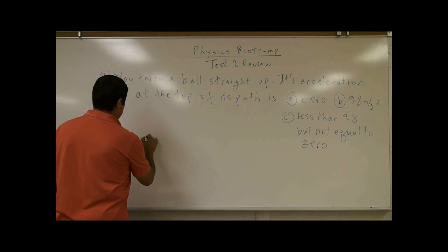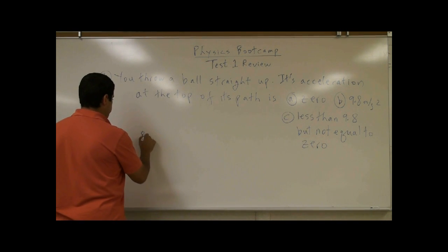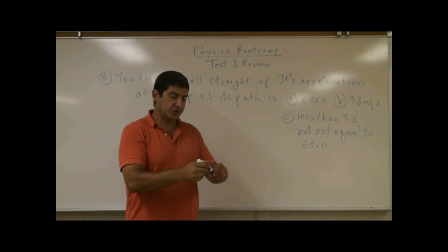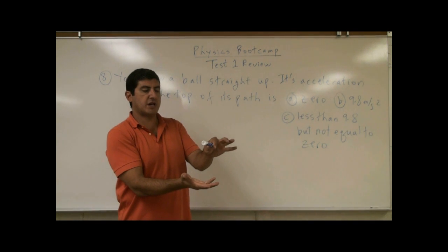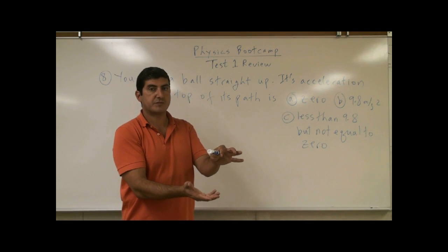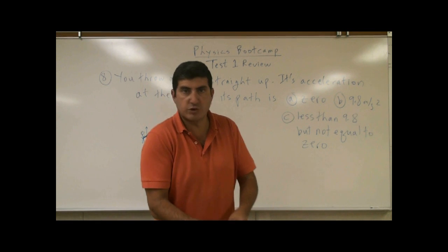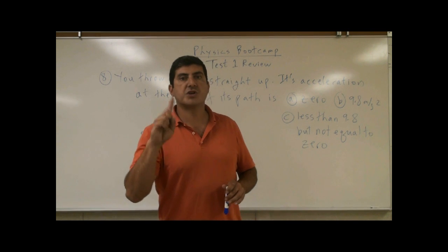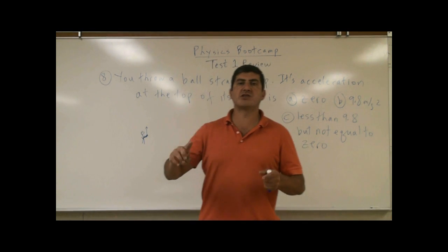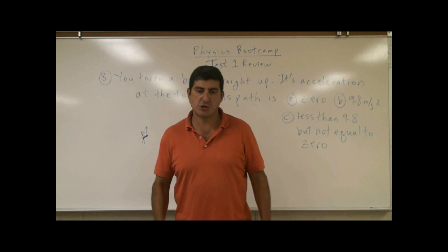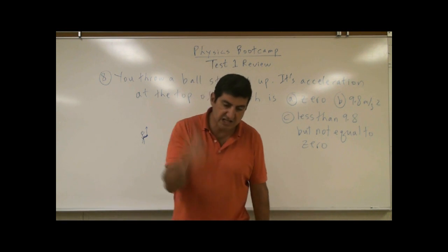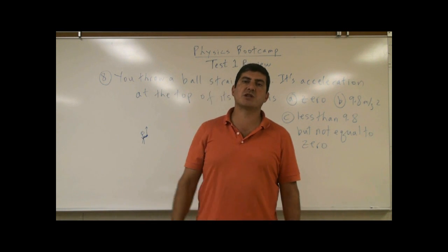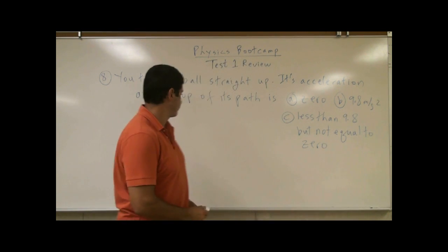Well, here is the issue. Once the person throws the ball and it leaves their hand — once you throw something and it leaves your hand — what is its velocity? The velocity is whatever you gave it, right? How fast you pushed. What is its acceleration? The acceleration depends only on the force of gravity. Gravity is pushing it down. Gravity is constant. And therefore, the acceleration is 9.8 meters per second squared down all the time.